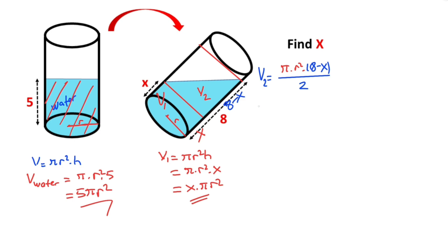And then we know that volume of the water must be equal v1 plus v2. So we know that volume of the water is equal pi r squared, v1 equals x pi r squared, and v2 equals pi r squared times 8 minus x over 2.